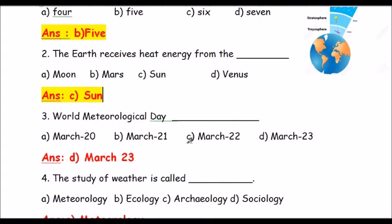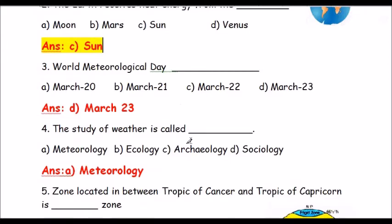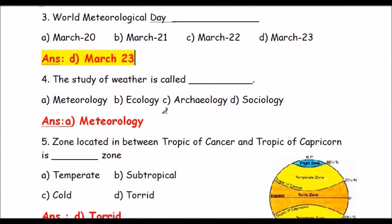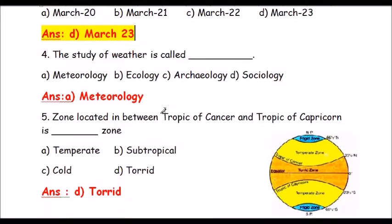Question number 3: World Meteorological Day is on which date? Options are March 20, March 2, March 22, or March 23. It is celebrated on March 23. World Meteorological Day is celebrated on March 23.